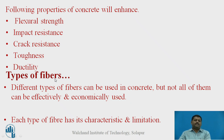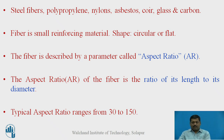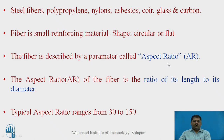Various types of fibers can be used in concrete, each with its own characteristics and limitations. These include steel fibers, polypropylene fibers, nylon fibers, asbestos fibers, glass fibers, and carbon fibers. A fiber is a small reinforcing material whose shape may be circular or flat, with straight ends, different end treatments, or crimped surfaces. Fibers are described by their aspect ratio — the ratio of length to diameter — with typical values ranging from 30 to 150, generally kept around 120.